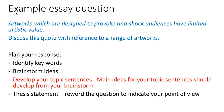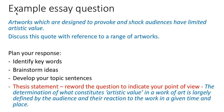From your brainstorm you should be able to develop your topic sentences — these are your main ideas for your paragraphs. From your topic sentences you should be able to formulate a thesis statement. Sometimes you can develop one simply by rewording the question to indicate your point of view. For this essay I've chosen to focus on artistic value and different aspects that influence an audience's determination of value. Our thesis statement is: 'The determination of what constitutes artistic value in a work of art is largely defined by the audience and their reaction to the work in a given time and place.'